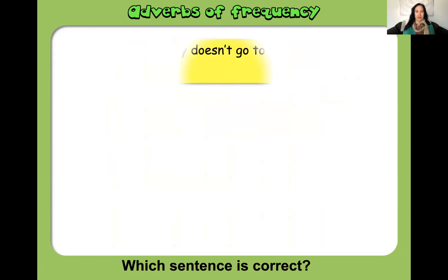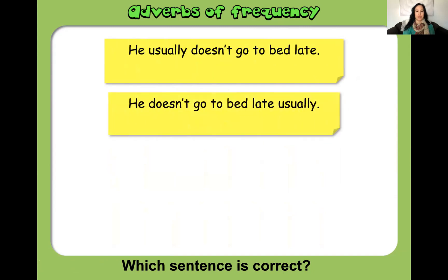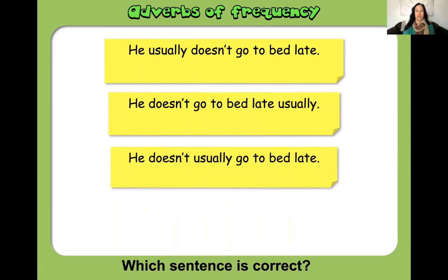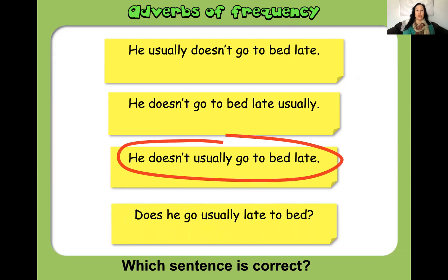Which sentence is correct? 'He usually doesn't go to bed late', 'He doesn't go to bed late usually', 'He doesn't usually go to bed late', or 'Does he go usually late to bed'? The correct sentence is 'He doesn't usually go to bed late.' Did you get it? Congratulations — that means you've been studying hard, or you already knew it and it was too easy!